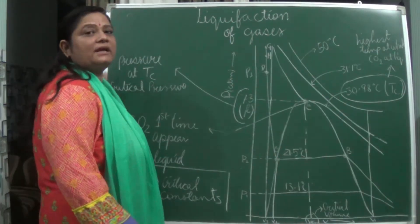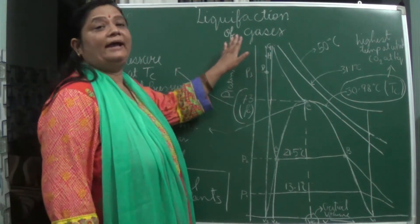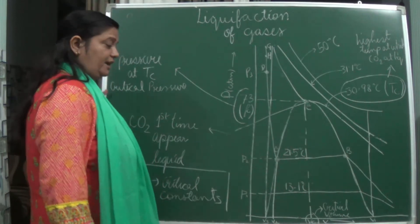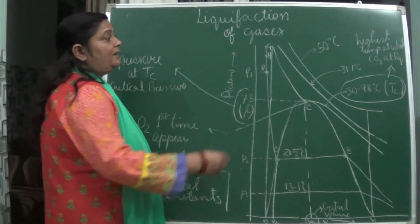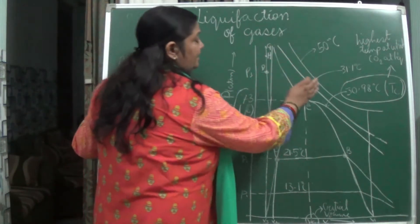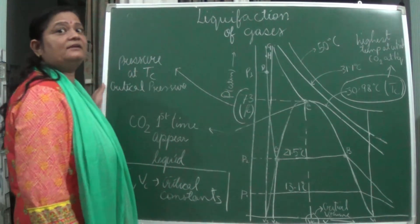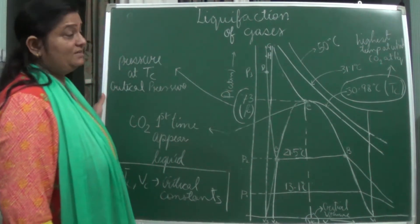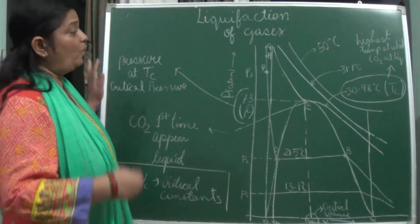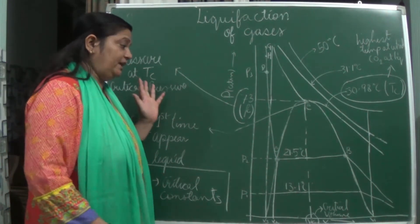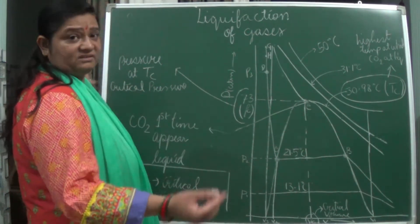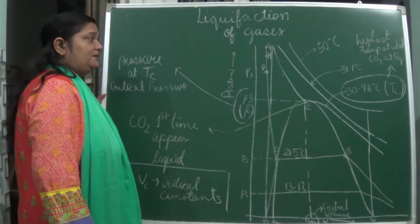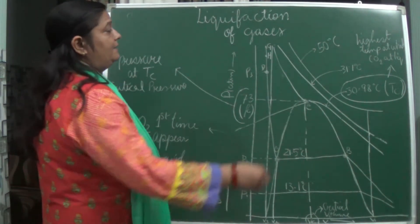Let us study the Thomas Andrews graph which shows how pressure and volume are related with temperature. Isotherm means constant temperature, but at different levels. We will be seeing at what pressure it is being liquefied, what is the volume, what is the temperature, and how they are related.